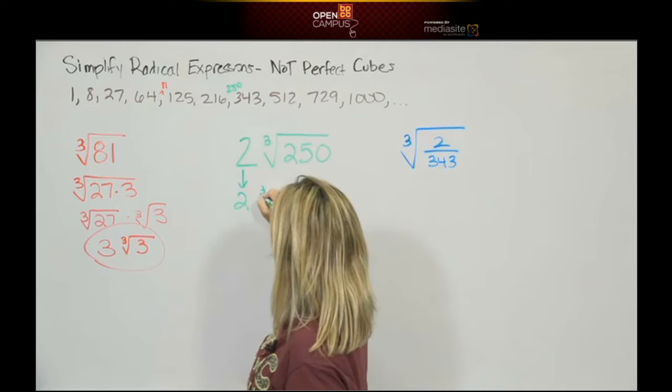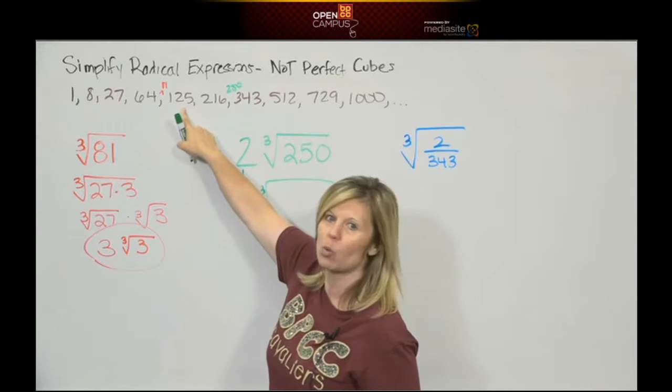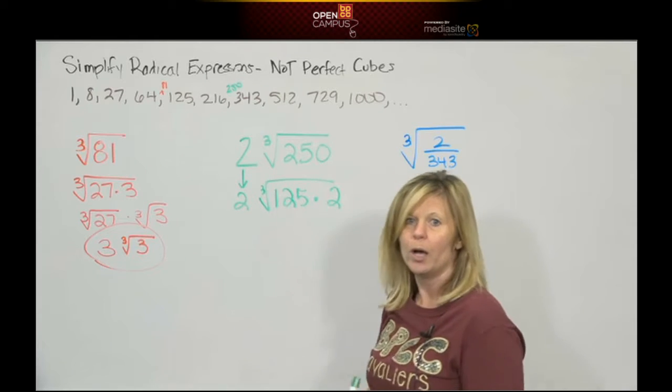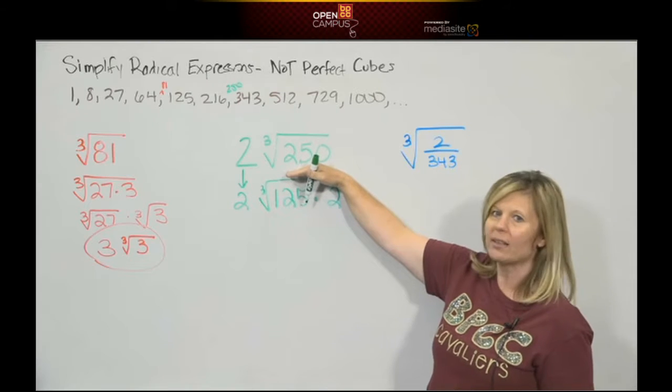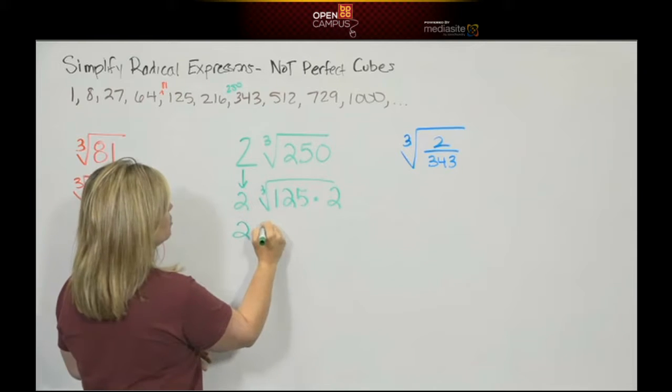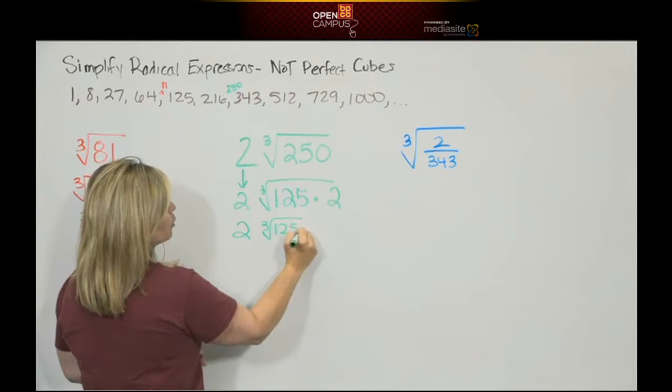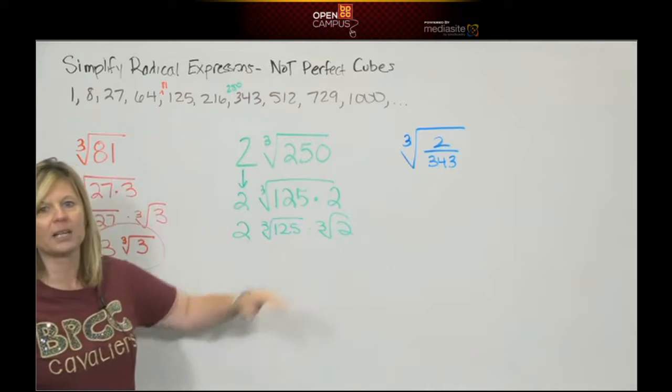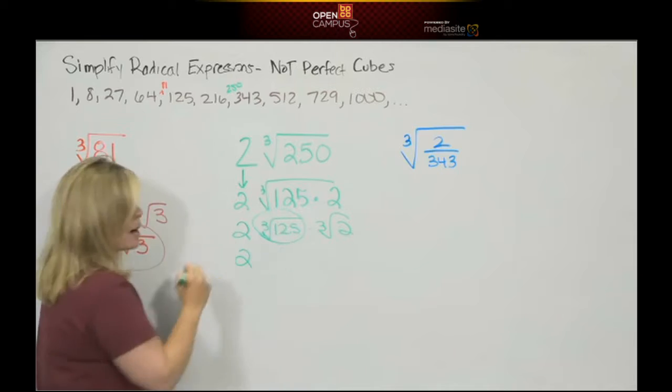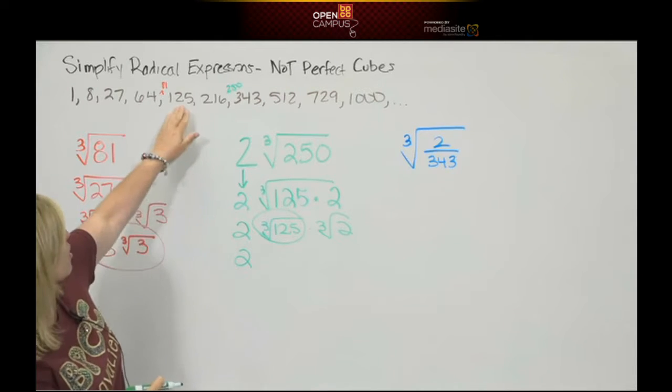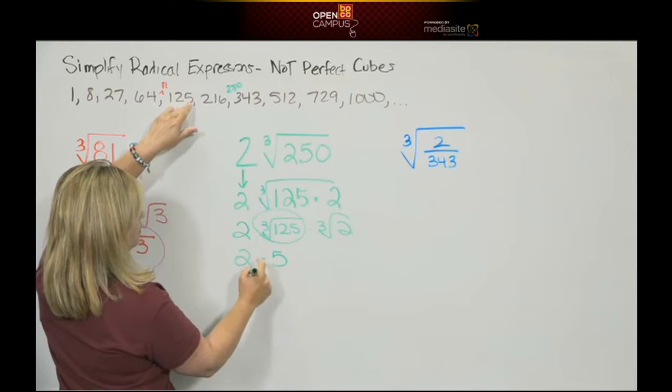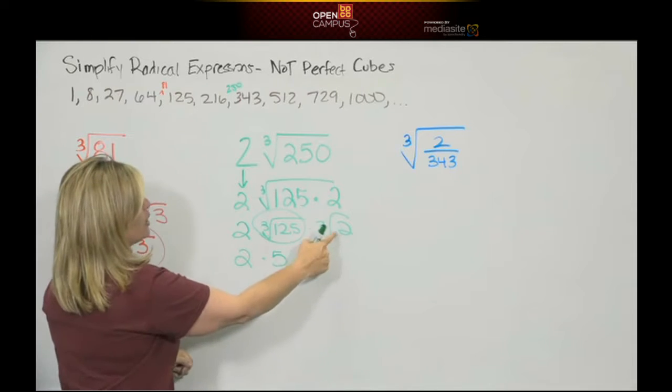Very good, it's 125. We're going to say 125 times 2 would be 250, so we're rewriting this radicand as a product. We can break this up into two cube root expressions because we're connected by multiplication. We're going to leave the whole number alone. We know the cube root of 125 because it's on our list, it's a perfect cube. It's 5 times 5 times 5, so we replace that with 5.